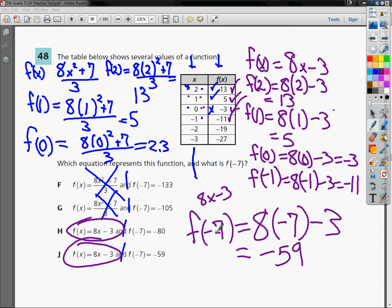So when I plugged in negative 7, I should get negative 59, which means in my little chart up here, I would get this. And since I have an answer that talks about negative 59 and has my answer choice, I'm going to say that J is my correct answer for number 48. Just based on the fact that I was able to split the problem into two parts and solve each one individually, I was able to get the correct answer without too much of an overall headache.